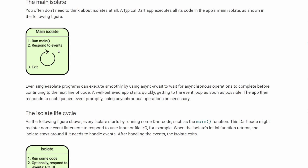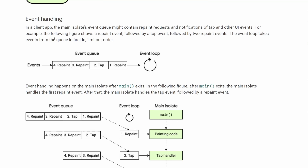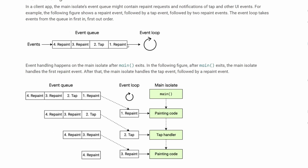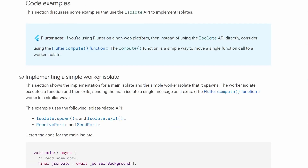We can also talk about the event loop as they explain here. An event loop is basically a first-in, first-out kind of a queue. So every event that comes into the loop will be outputted in the same order as it comes in. For example, first we had this repaint event that came, so it was executed first. Then we have tab, repaint, repaint — so as they come in, the first that came in will be executed first.